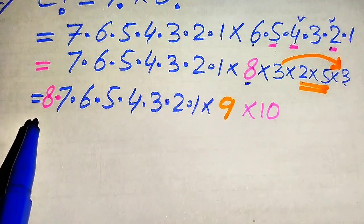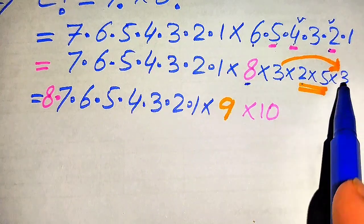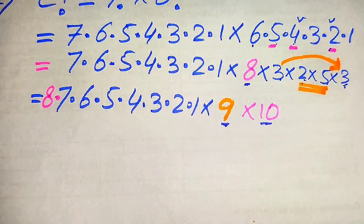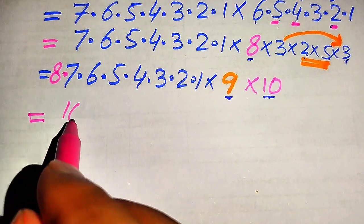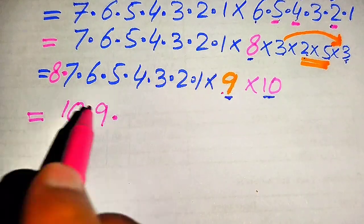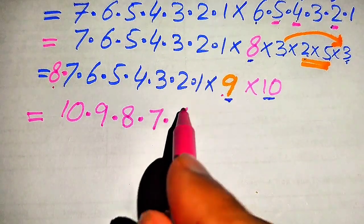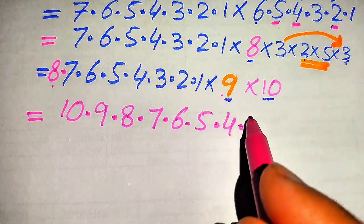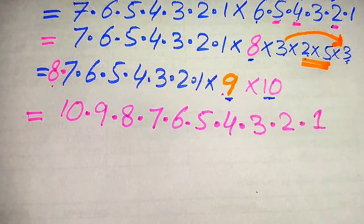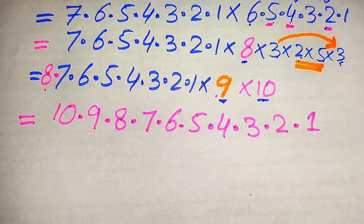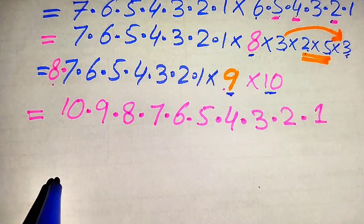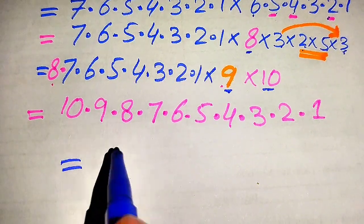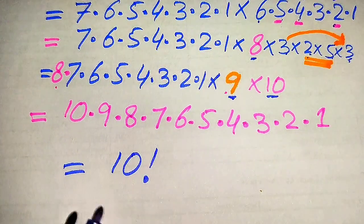Next, we multiply 3 × 3 to get 9, and 2 × 5 to get 10. After rearranging, we have 10 × 9 × 8 × 7 × 6 × 5 × 4 × 3 × 2 × 1. When we combine all of these terms, this becomes 10 factorial.